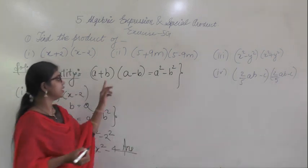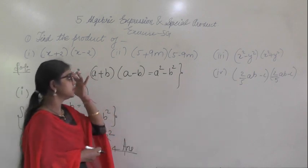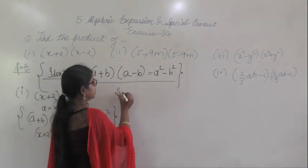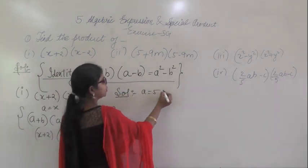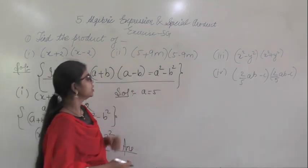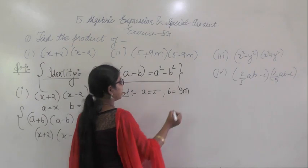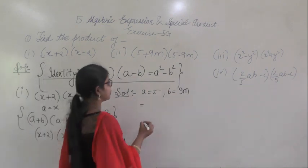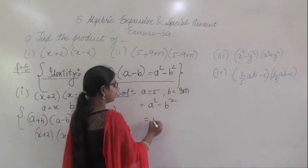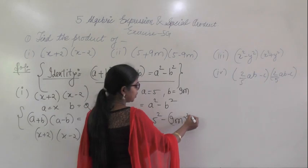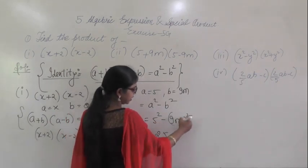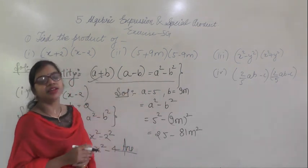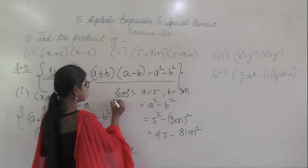Similarly, in the second question it is given: 5 plus 9M multiplied by 5 minus 9M. Using the identity A plus B into A minus B, here A equals 5 and B equals 9M. By the identity, this equals A squared minus B squared, which is 5 squared minus 9M whole squared — that is 25 minus 81M squared. We have used identity 3: A plus B into A minus B equals A squared minus B squared.